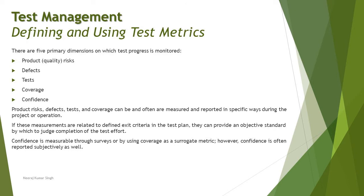The first thing we are trying to understand is that there are five primary dimensions which can be measured to understand the progress on the project. These primary dimensions cover all aspects of the activities performed as part of the testing life cycle. The five primary dimensions are: product risk (also referred to as quality risk), defects, test, coverage, and confidence.